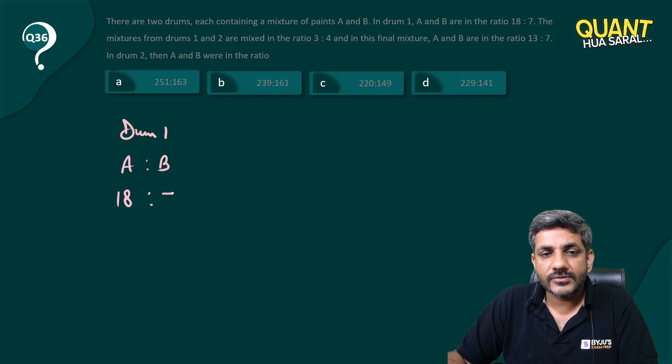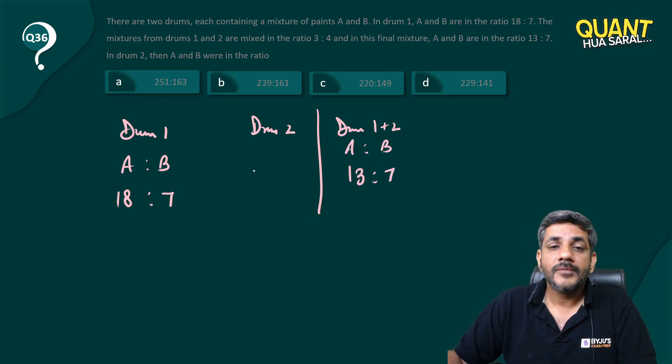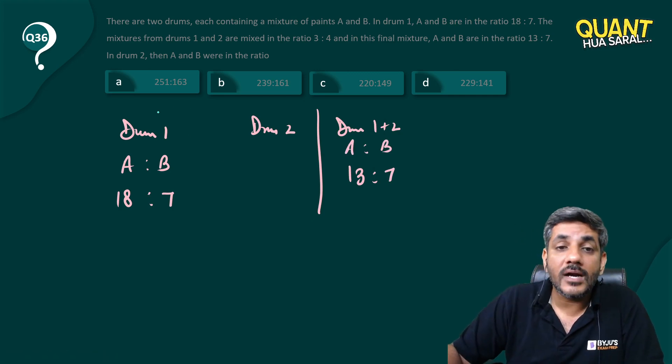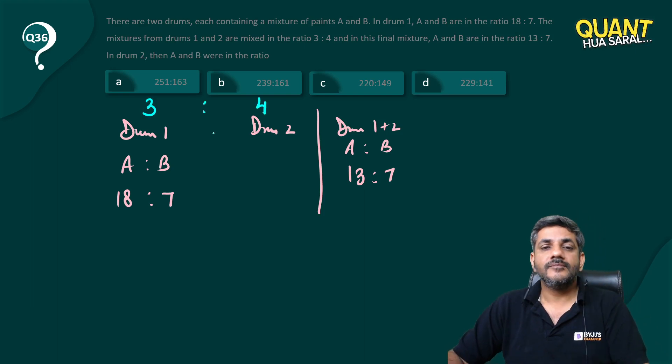of 18:7. In drum 2 we do not know what is the ratio, but when I mix them, let's make it drum 1 plus 2. There the ratio of A and B is 13:7. Also he says that the quantities that are mixed are in a ratio of 3:4.